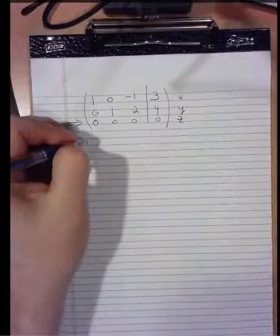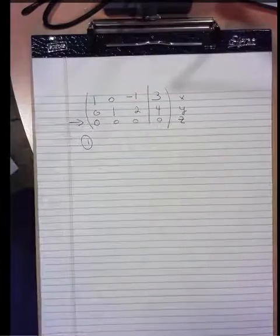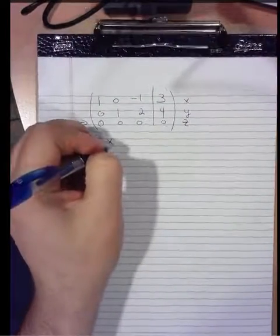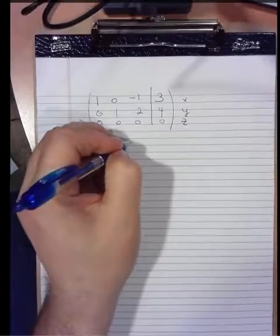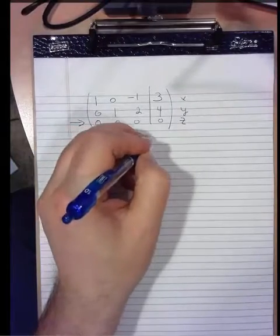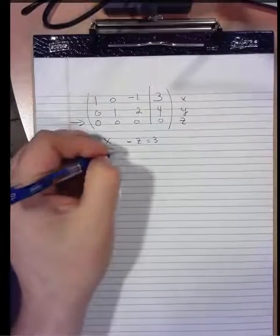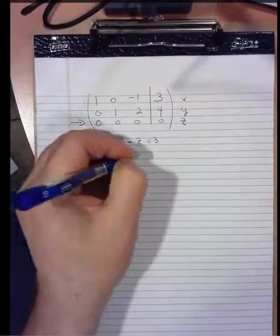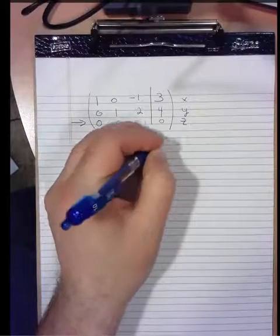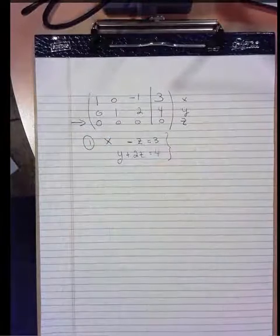So the first row tells us this relationship. There's one x, there's zero y's, there's a negative z, and that's equal to three. In the second row, there's no x's, there's one y, there's plus two z's equals four. That's what we know about this system.